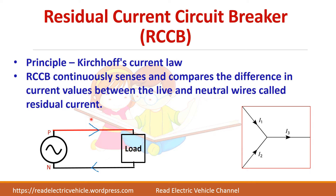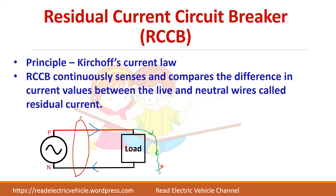The RCCB senses the difference between the two currents. Under normal conditions, these two currents should be equal. But whenever there is a fault, a part of the current will flow away. Due to that, the current flowing through the phase line will not be equal to the current flowing through the neutral line. There will be a difference of current, which is called the residual current. The RCCB will sense this residual current and trip the breaker, opening the circuit.